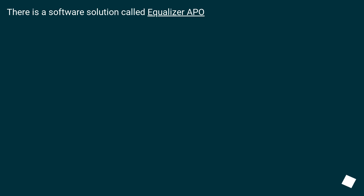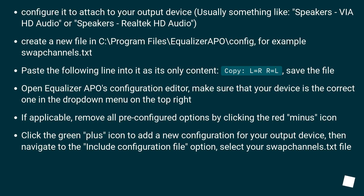There is a software solution called Equalizer APO. Configure it to attach to your output device, usually something like 'Speakers via HD Audio' or 'Speakers Realtek HD Audio'. Create a new file in C:\Program Files\Equalizer APO\config, for example named 'swap_channels.txt'.